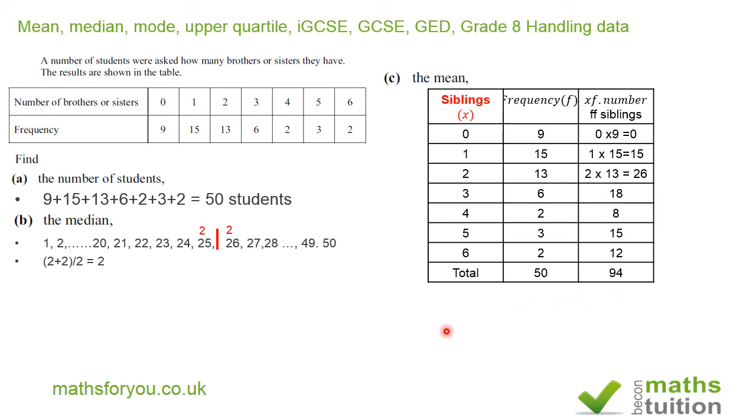Now if you divide this total of 94 by 50, we get the mean and the mean is now 1.88. If you write down just 2 in the exam, you get it wrong. The examiner expects to see 1.88. So that should be the answer.